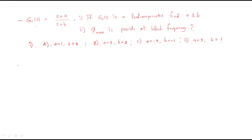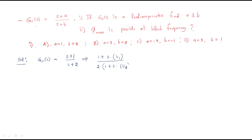For the first question, you should convert into the specific lead compensator format. The solution: gc(s) = (s+1)/(s+2). We convert this by factoring — common the 2 — to get the form (1 + sτ) / (1 + sτα), which is the standard lead compensator format.